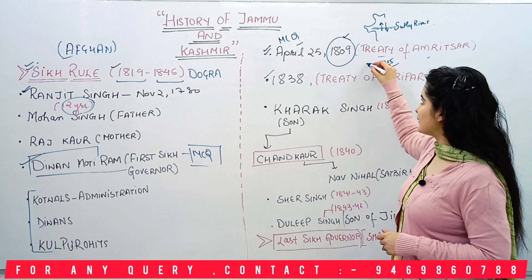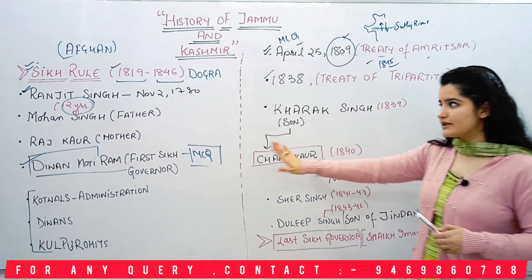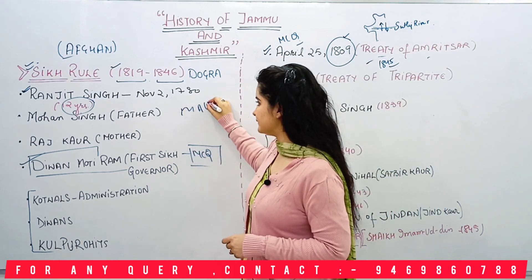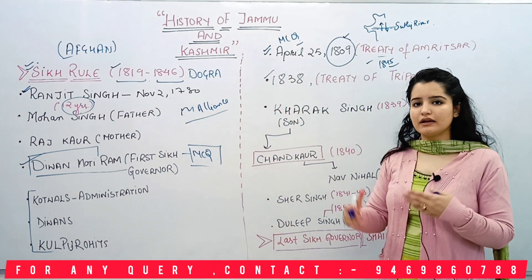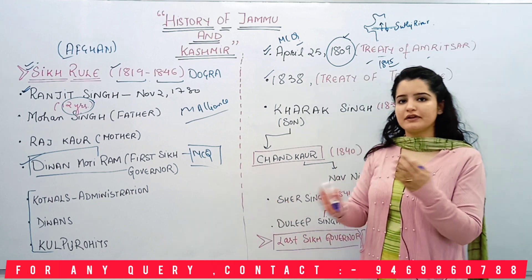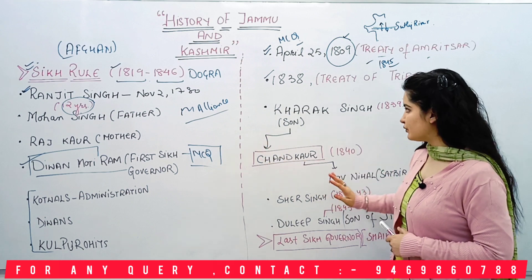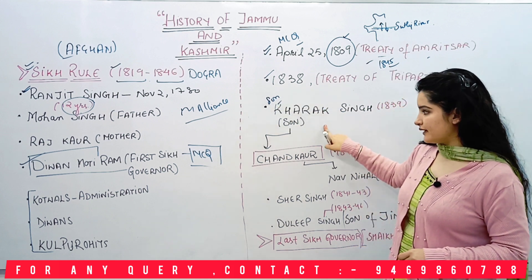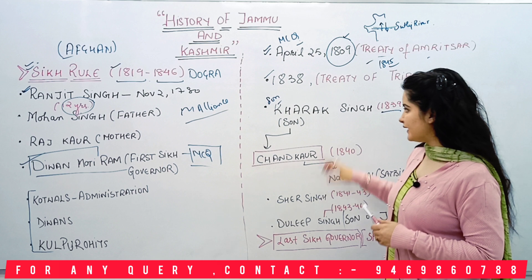Zainul Abidin is also very important. After Ranjit Singh, Khadak Singh came. Ranjit Singh followed the concept of matrimonial alliances — he married multiple wives so that the empire would continue and expand through his children. However, this theory failed. Khadak Singh was his son, and Khadak Singh's rule came after 1839, but it was very brief.